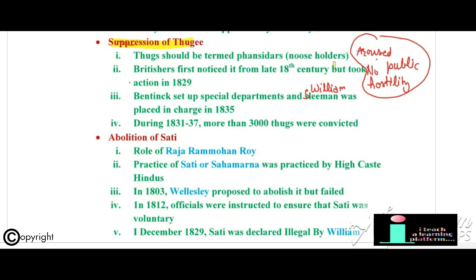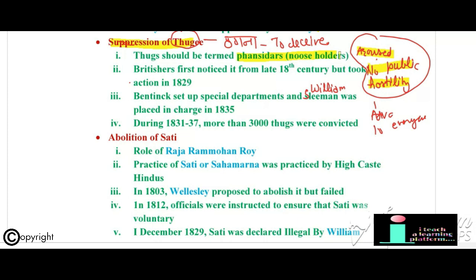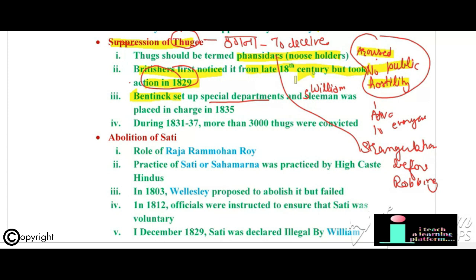The next important reform was the suppression of Thuggee. The campaign against Thuggee aroused no public hostility because its practical advantages were plain to everyone. The word 'thug' was probably derived from the Sanskrit word 'sthagna,' meaning to deceive. Thugs — more accurately called 'Phasigar' or noose-holders — used strangulation to murder victims before robbing them. The British first noticed this from the late 18th century but took action in 1829. Bentinck set up a special department; William Sleeman was placed in charge in 1835. During 1831–1837, more than 3,000 thugs were convicted.